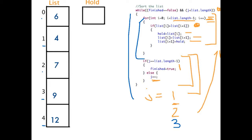j is less than list dot length, finished is still equal to false, so we're going to go back through that for loop. Is six bigger than four? Yes. So we move it into hold, we move four up and we pop six down. Is six greater than seven? No. Is seven greater than nine? No. Is nine greater than 12? No. So our for loop is finished and we're asked if j is equal to list dot length minus one. Now list dot length is equal to five — there are five items there. List dot length minus one is equal to four. We're not currently there yet, so we increment and do j plus plus. That means our j is now equal to four.